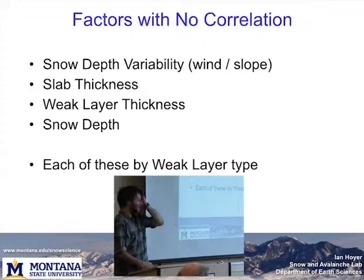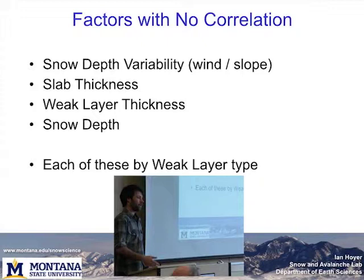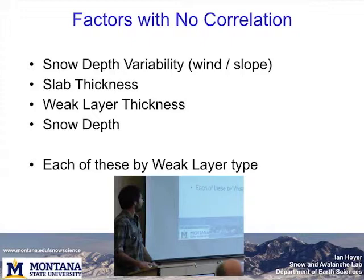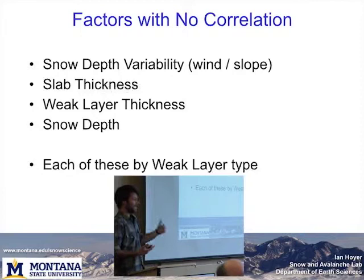I did a bunch of data analysis looking at things I wasn't finding any correlation with. First, I looked at whether variability in snow depth across my slope was correlating with propagation variability — whether slopes were more hummocky or had wind effect. I didn't find a correlation there, or for slab thickness, weak layer thickness, or variability in any of those. I also broke those down by weak layer type, thinking a depth hoar layer might be more affected by snow depth than a surface hoar layer only affected by snow on top of it.